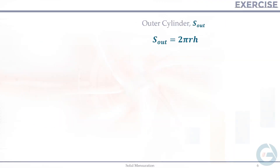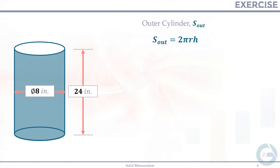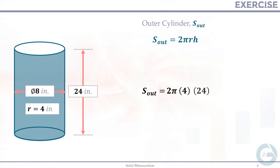For the outer cylinder: the lateral surface area equals 2π times the radius times the height. The given diameter is 8 inches, so the radius is 4 inches. Plugging in: 2π × 4 × 24 = 192π square inches. This is the lateral surface area of the outer cylinder.